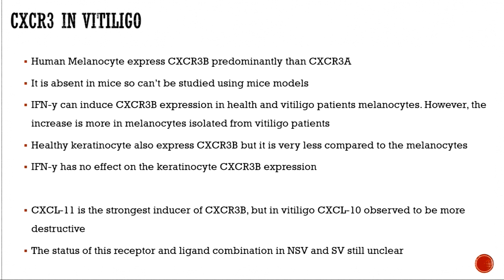Human melanocytes express CXCR3B compared to CXCR3A, and this isoform is absent in mice, making mouse studies less relevant for CXCR3B specifically. When melanocytes are primed with IFN-gamma, there is an increase in expression of this receptor, which is further elevated in melanocytes isolated from vitiligo patients. Keratinocytes also express this receptor but less prominently, and IFN-gamma does not affect its expression in keratinocytes. Bioinformatic binding studies show CXCL11 is the strongest inducer for CXCR3B, but in vitiligo, CXCL10 has been observed to be more destructive.